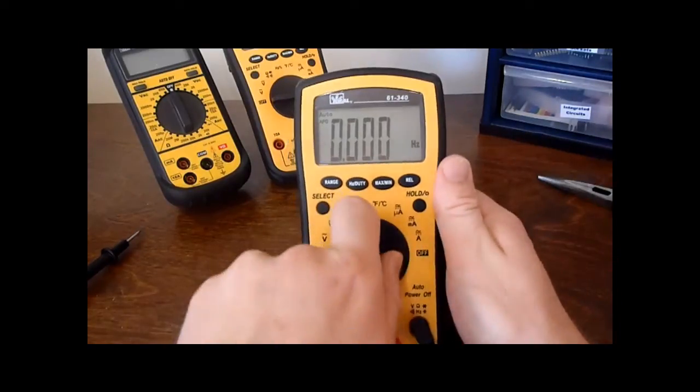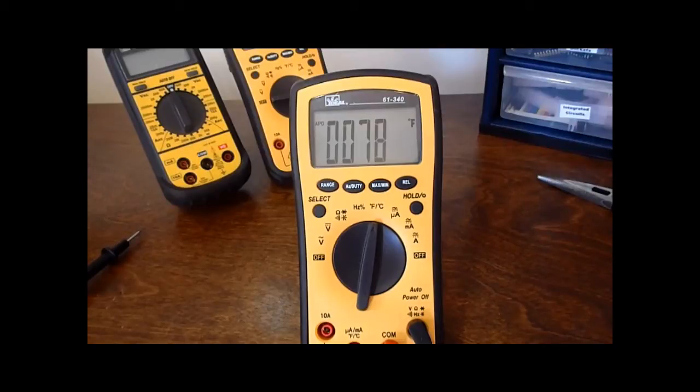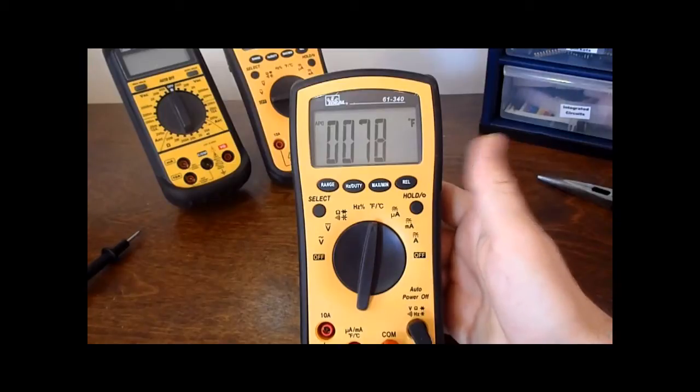Continuing on is the Fahrenheit and Celsius, which is quoted to be accurate to 3%, plus 3 degrees Celsius or plus 5 degrees Fahrenheit. Personally I don't think you should be using a multimeter for anything really precise for measuring temperatures.